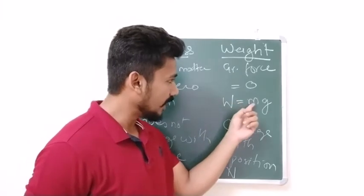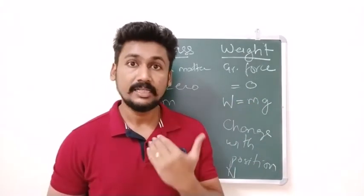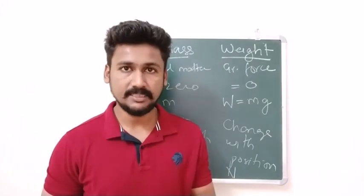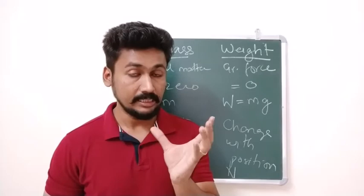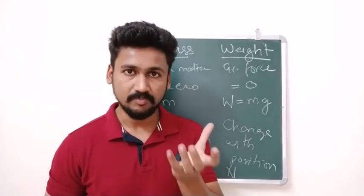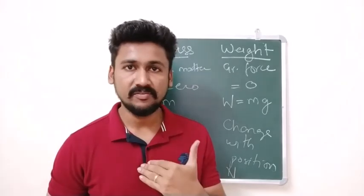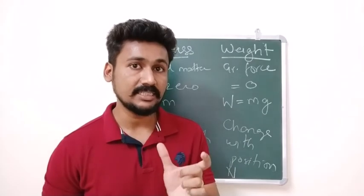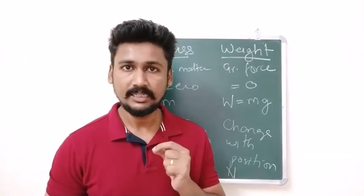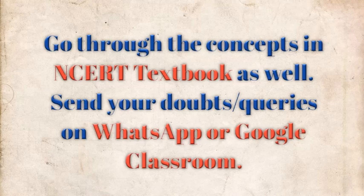So what happens? W is equal to M into 0. So the weight becomes 0. The astronaut feels weightless. Actually the mass has not become 0. The astronaut is still having a lot of mass. But the weight of that astronaut has become 0. No force of gravitation. So he is able to float in the space. So that is the concept of weightlessness in the space.